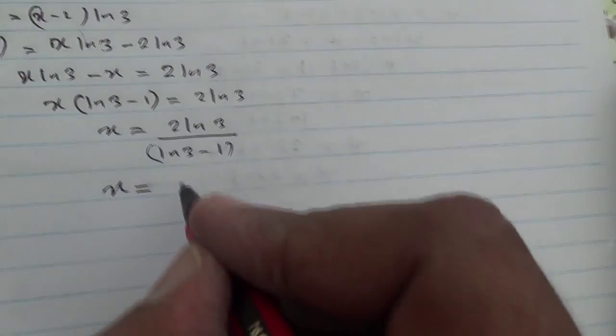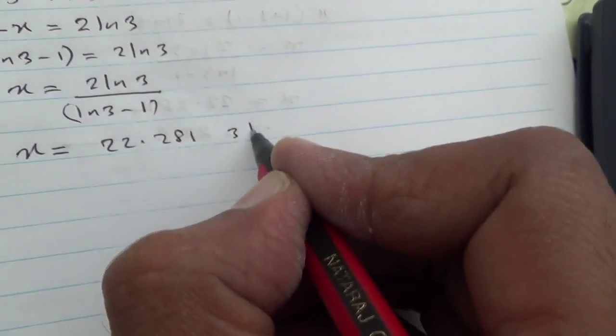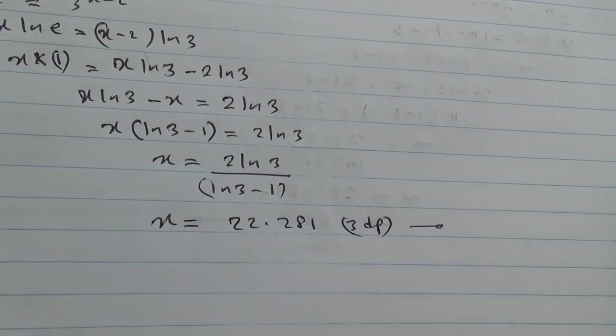So, to 3 decimal places, the answer is going to be 22.281, which is to 3dp. And here is your answer, 3 marks for you. Thank you.